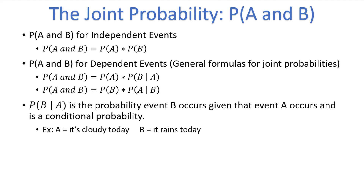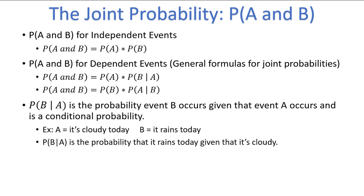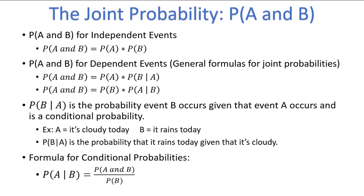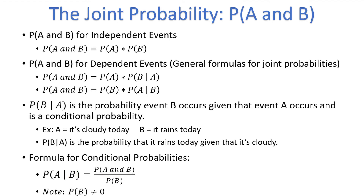For example, if A is the event that it's cloudy today and B is the event it rains today, the probability of B given A is the probability that it rains today given that it's cloudy. We can rearrange the second general formula to solve for the conditional probability that A occurs given B has already happened, by taking the probability that A and B happen together and dividing by the probability of B. To help you remember this formula: the top of the fraction is the joint probability of the two events, and the denominator is the probability of the event conditioned on — in this case event B. Note that we must also assume that the probability of B is not equal to zero, so that we don't have a divide-by-zero error.